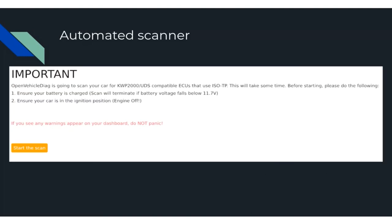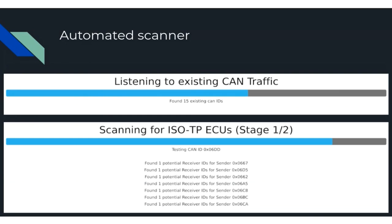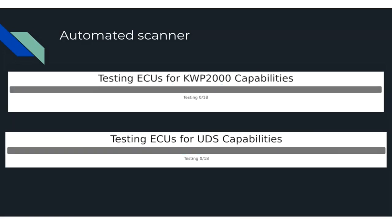On the automated scanner intro screen: the scan will automatically terminate if battery voltage falls below 11.7 volts — deemed a safe cutoff since the scan takes a few minutes. The user is told to make sure their engine is off, since putting an ECU into extended diagnostic mode might cause undefined behavior. The user is also told not to panic at any dashboard warnings, as everything returns to normal once the scan completes. OVD first listens for existing CAN traffic to avoid sending frames with those same CAN IDs, then begins scanning for ISOTP endpoints, tests KWP2000 and UDS, and saves to JSON.